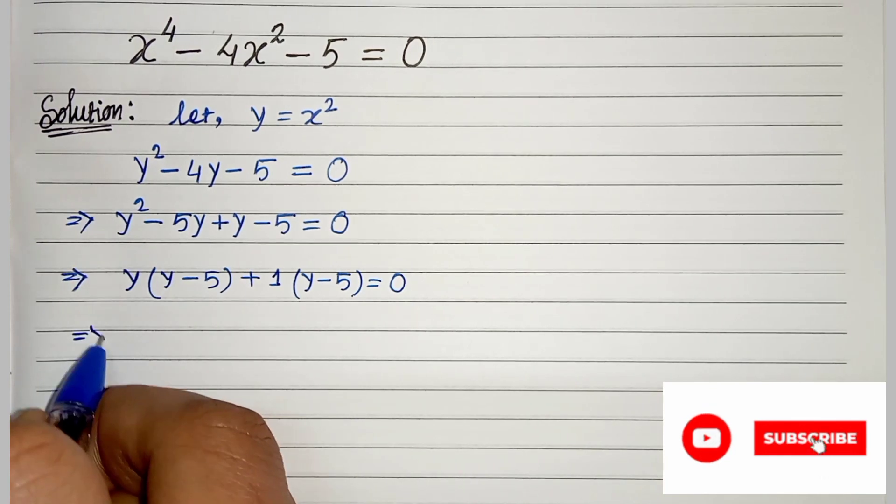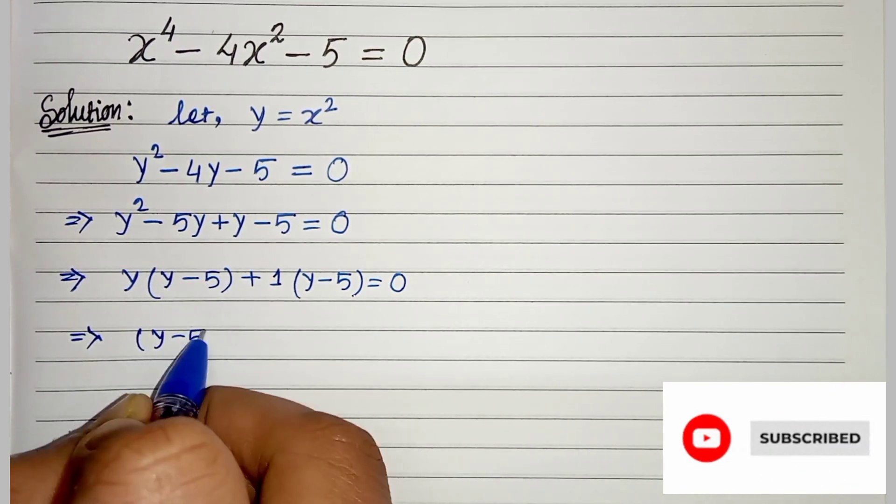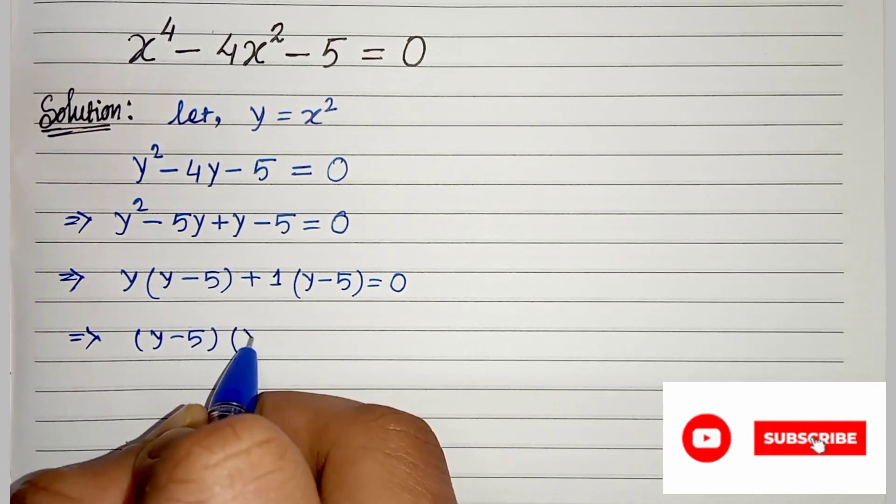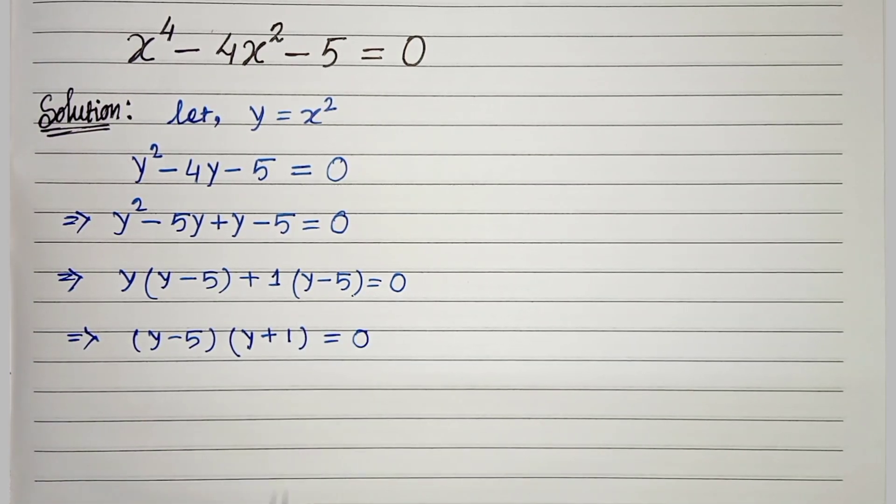In the next step, let's take common y minus 5. So here it will be y minus 5 times y plus 1 equals to 0.